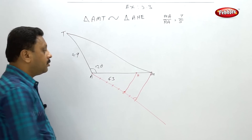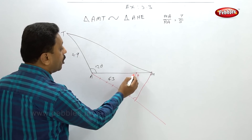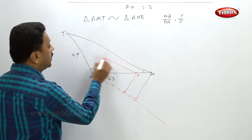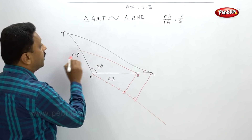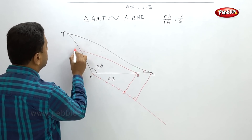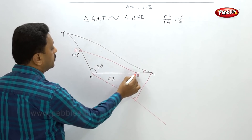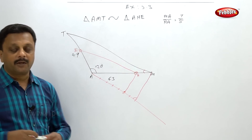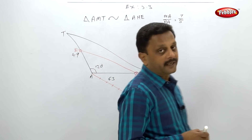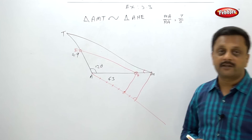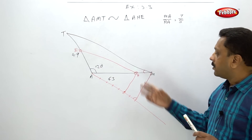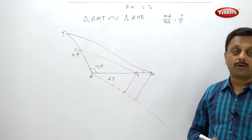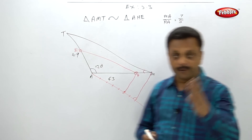Draw a congruent angle to M at H, so this line will be parallel and you will get point E. You just have to draw 2 congruent angles and your figure is complete. Please pause your video and actually construct both the triangles.